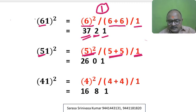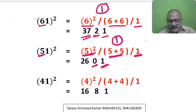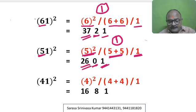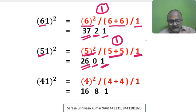51 square: 10th digit is 5. 5 square, 5 plus 5, 1 — I write here 1; 5 plus 5 is 10, this 1 is carry forward. 5 square is 25; 25 plus carry forward 1 is 26. So 51 square is 2601.